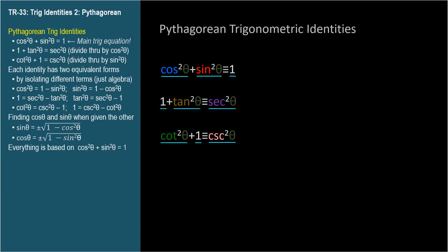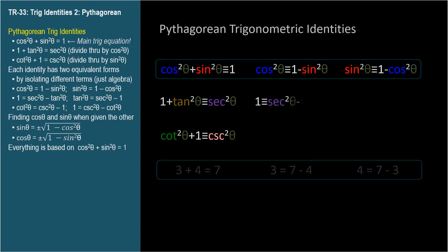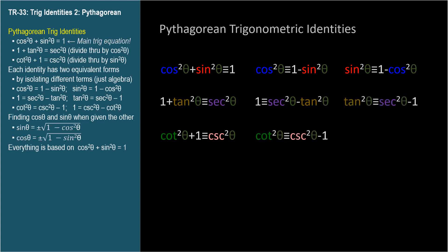For each identity, we can isolate whichever term we like to get equivalent identities in different forms. These three equations all represent the same identity. It's not complicated. If I tell you that 3 plus 4 equals 7, then you also know that 3 equals 7 minus 4, and 4 equals 7 minus 3. They express the same relationship, so likewise each basic identity can be stated in three ways.